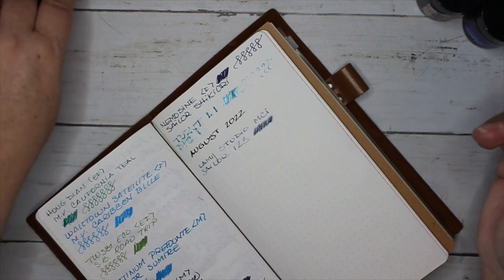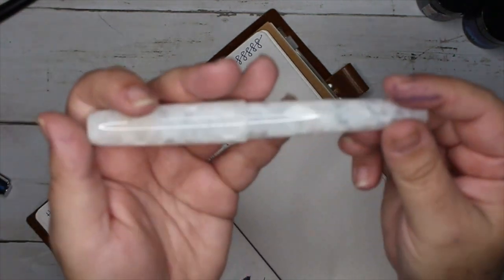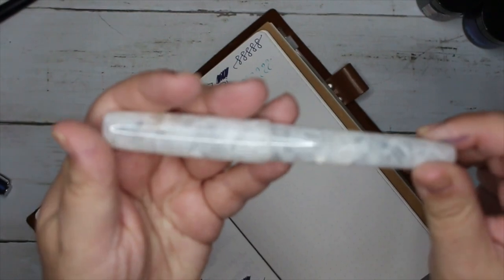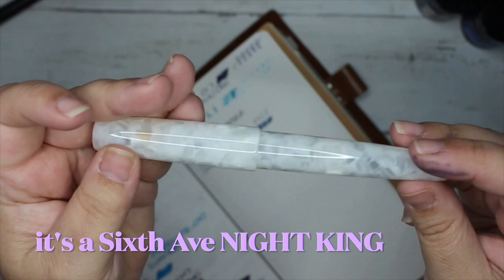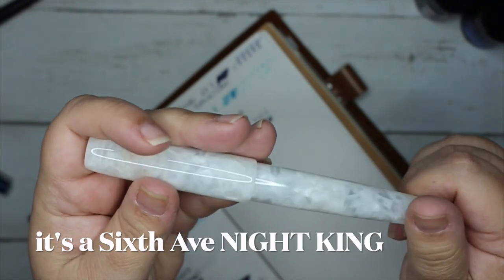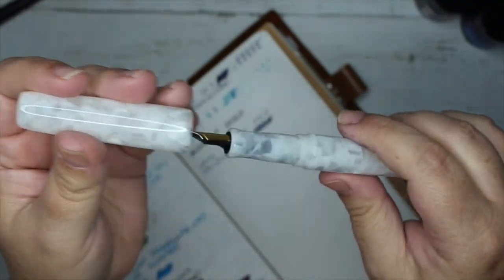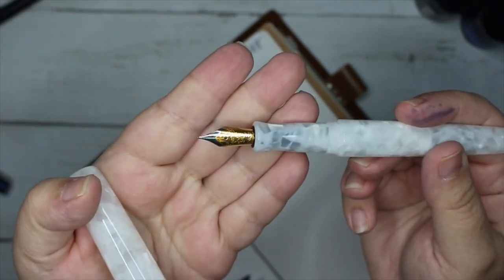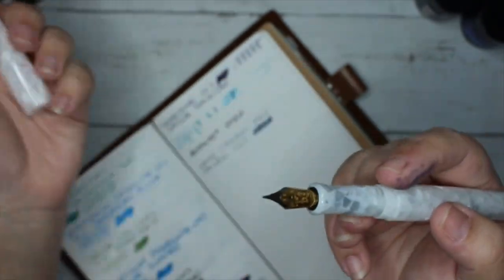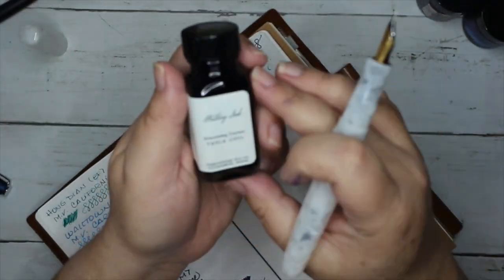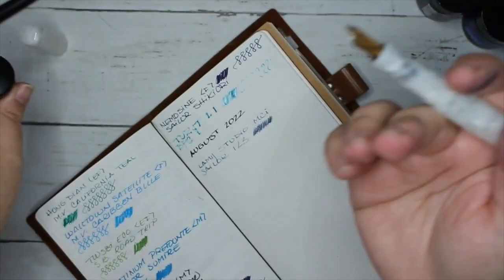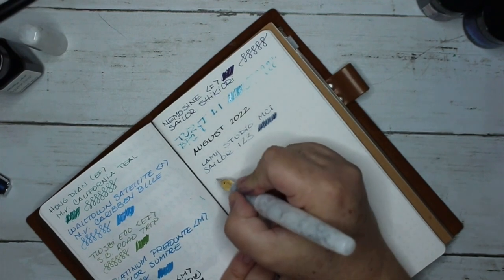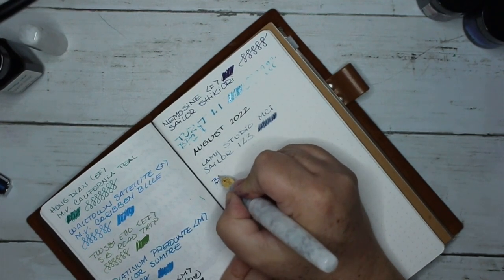Next up we have an oldie but a goodie, haven't used this in forever. This is Birmingham Pen Company's Night King, but I don't remember the model. It's been a few years. This has a Knox medium nib, two-tone medium nib. I love this nib so much. I'm sad that they're gone. I have it inked with Birmingham Pen Company Tesla Coil.